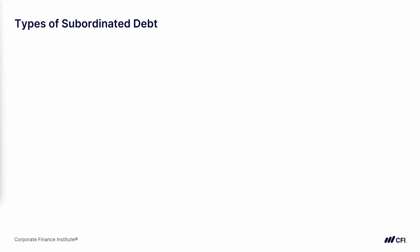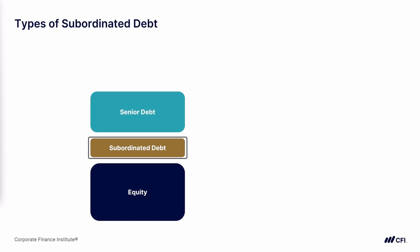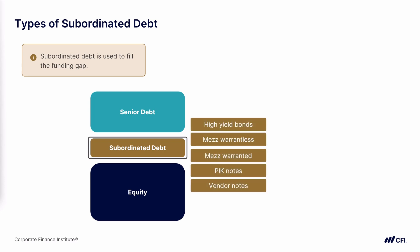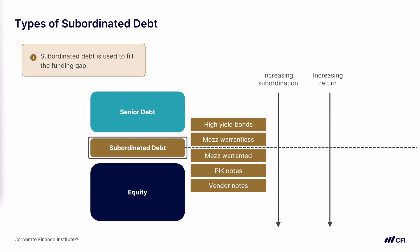Subordinated debt is often used to fill a funding gap — when a company has maxed out available senior debt and needs additional capital. There are many types of subordinated debt, including high-yield bonds, mezzanine debt (with or without warrants), PIK notes — payment-in-kind notes — and vendor notes. These are stacked in order of subordination, with vendor notes being most subordinated. More subordinated investors demand a higher rate of return, and there is increased potential for dilution towards the more subordinated instruments.